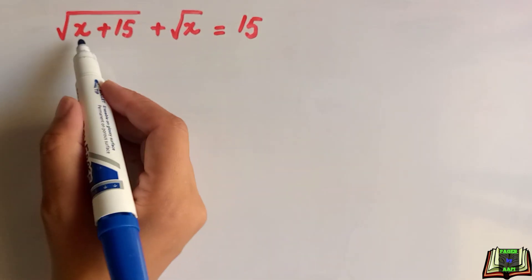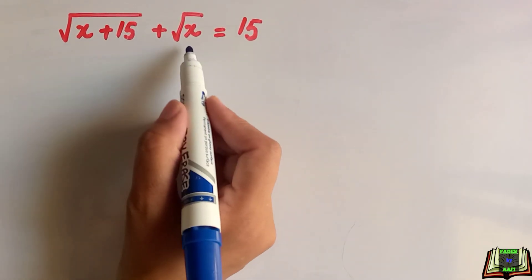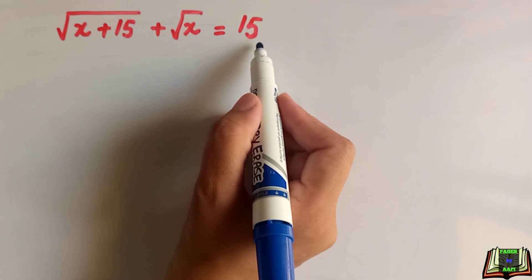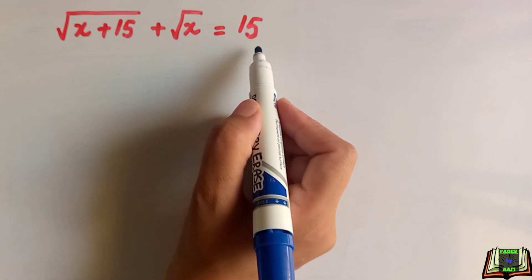Hi, let's solve this radical problem. If square root of x plus 15 plus square root of x is equal to 15, then we have to solve for x in this question.